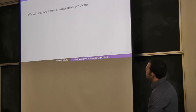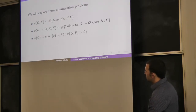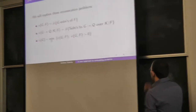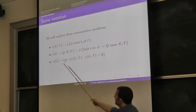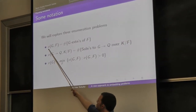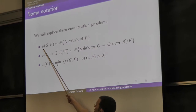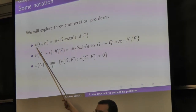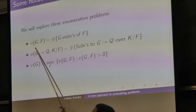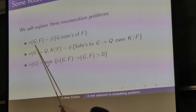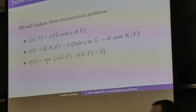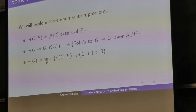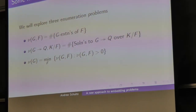Let me give three definitions for enumeration. ν(G, F) counts the number of G-extensions of F inside a fixed algebraic closure. ν of an embedding problem is the same question but for extensions of extensions of fields — the embedding problem analog. And the realization multiplicity ν(G) is the minimum, over all fields where G appears, of ν(G, F).